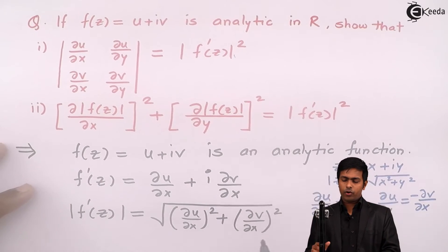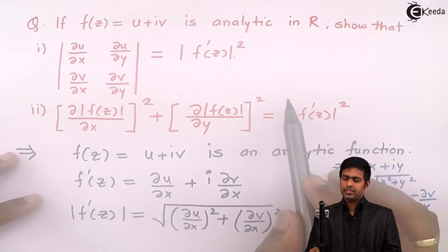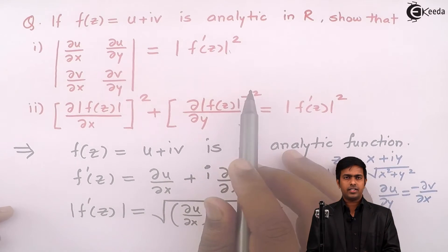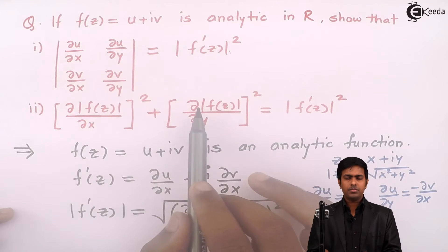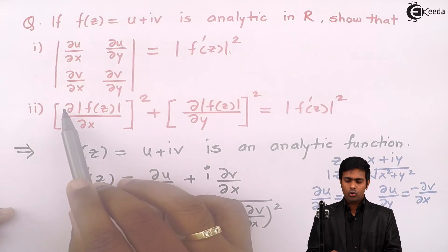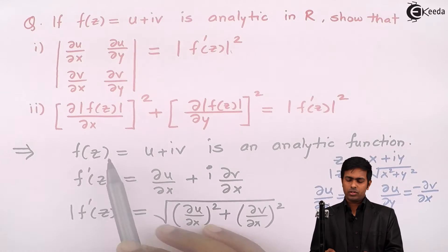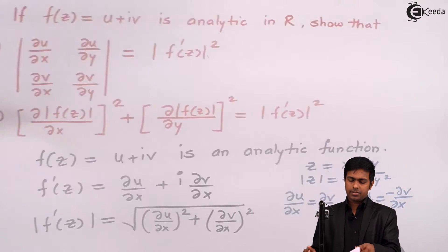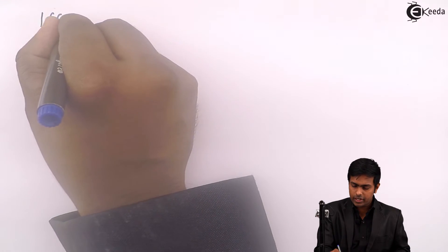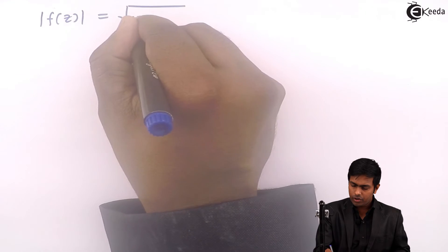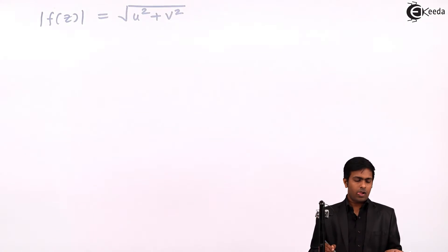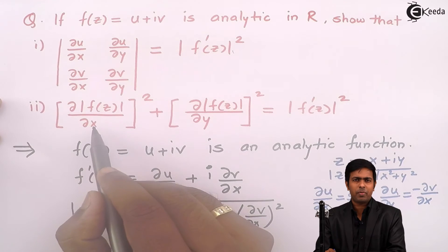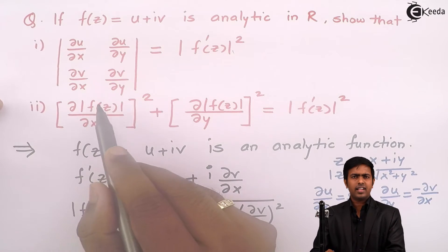Now let us prove the second result. For the second result, the right-hand side is the same as result 1, so we do not have to find the RHS again. We will directly start with the left-hand side. In the LHS there are two terms. Let us find the first term, ∂/∂x of |f(z)|. Since f(z) = u + iv, we have |f(z)| = √(u² + v²).